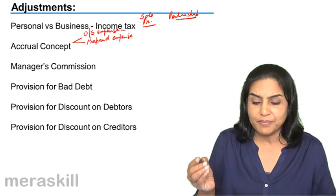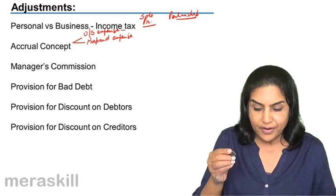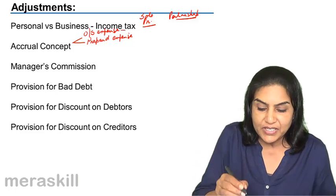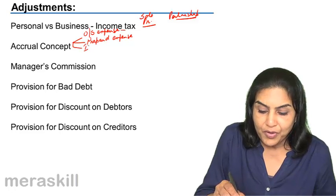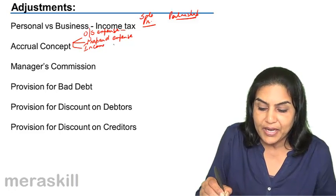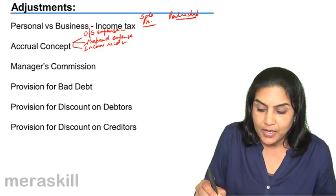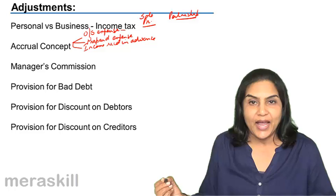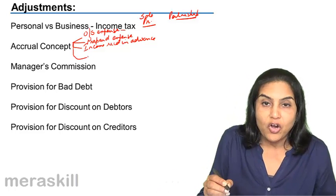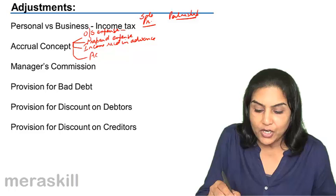Accrual concept gives rise to therefore outstanding expense, prepaid expense and therefore in the same way, we may have received income in advance, which again would be a liability and has to go to the balance sheet.